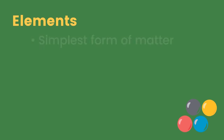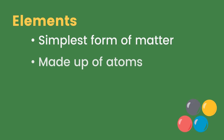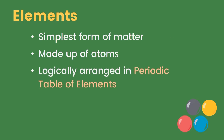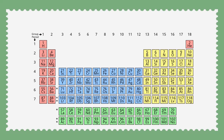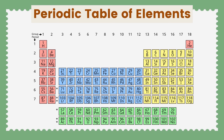Elements are the simplest form of matter. They are made up of atoms, and are logically arranged in the periodic table of elements. Here is the periodic table of elements — there are 118 elements in the periodic table.